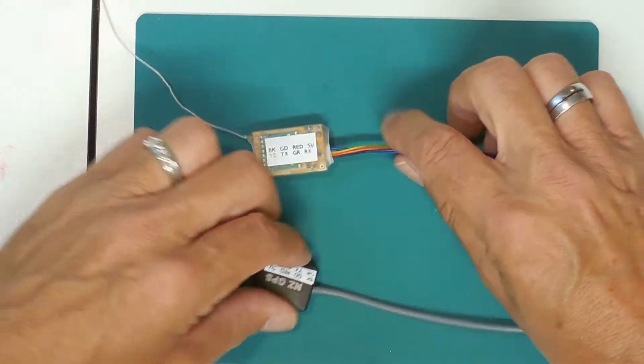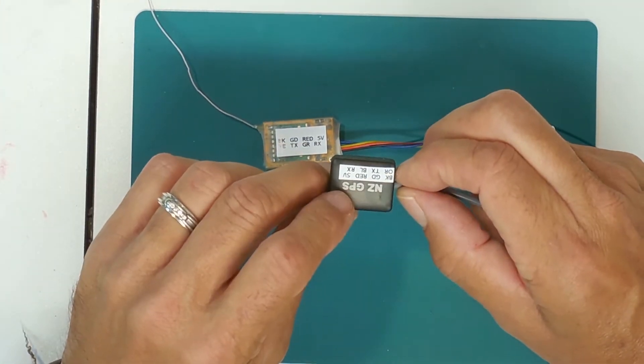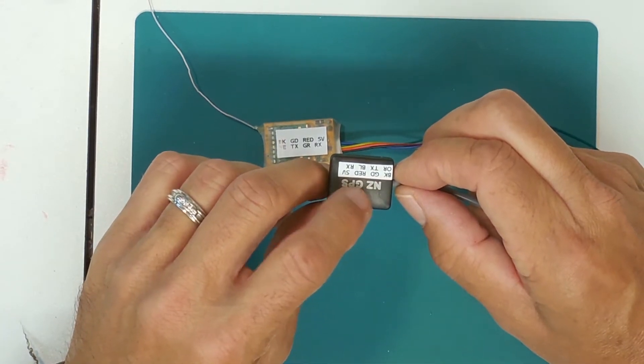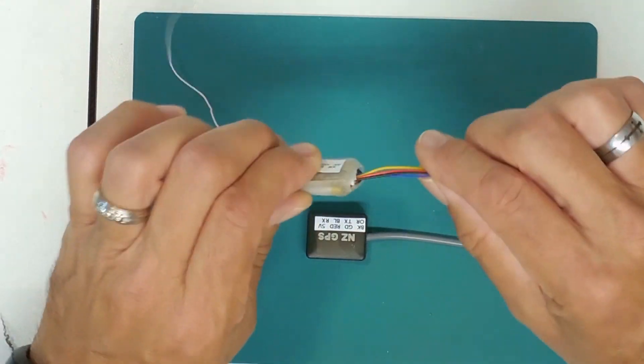What I'll be doing is they're both 5-volt units. And you notice I've already put on what the ground and power as well as the transmitter receive for both devices.